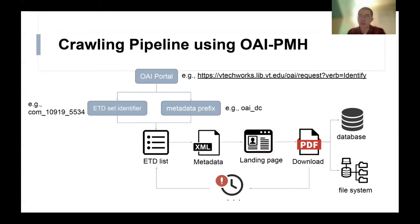We spent a long time to collect all the ETDs and met a lot of challenges. First, not all PDFs are downloadable because some have restricted access. Second, the HTML DOM structure varies across repositories, so we had to write custom parsers to parse the HTML files. Not all metadata has the same fields — for example, department, discipline, subject, and year issued are often missing. Even if metadata is available, it often has inconsistent format or is simply missing. Also, even if we strictly followed the crawl delay in robots.txt, our requests could still be blocked, so we needed to find the best crawl delay through trial and error.